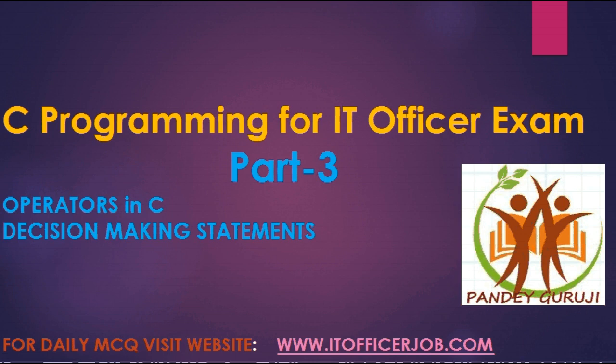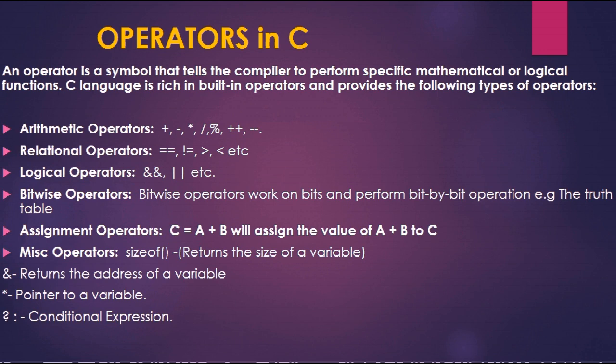An operator is a symbol that tells the compiler to perform a specific mathematical or logical function. C language is rich in built-in operators and provides a list of types of operators — symbols which tell the compiler to perform specific mathematical or logical operations, like add, subtract, divide, or increment two numbers.